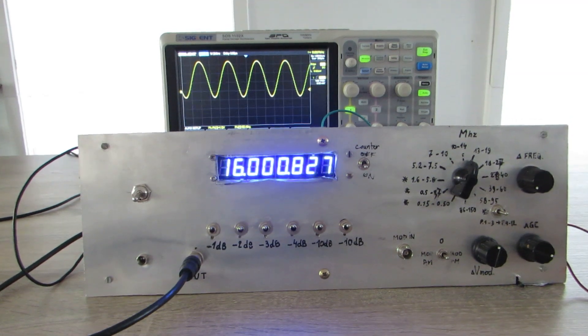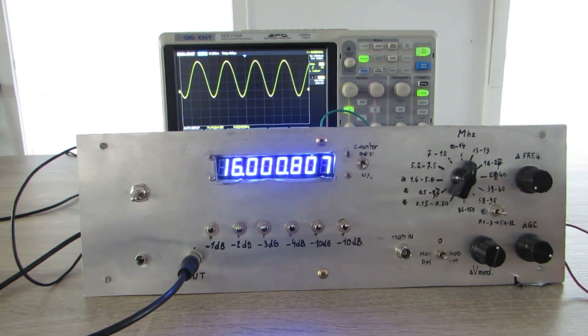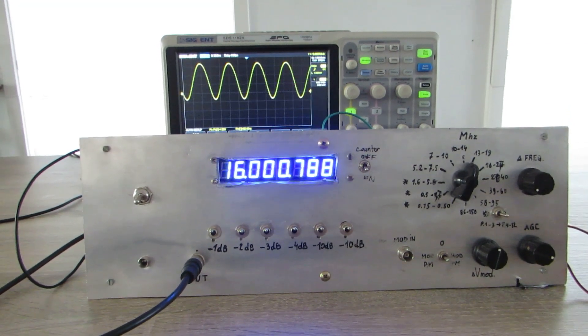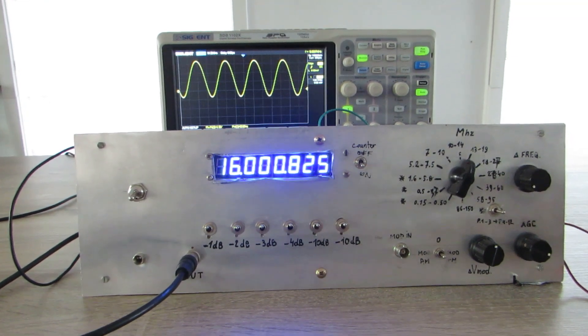Correct me if I am wrong, but I suppose this is due to the fact that the current required by the frequency counter module varies a lot, because the several segments on the display turn on and off constantly and influence in that way also the voltage.